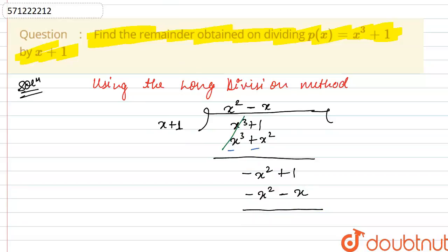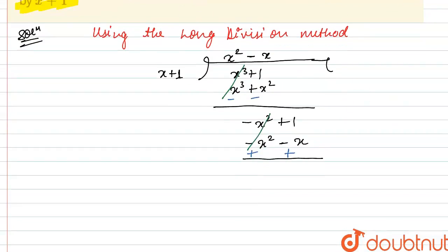So again we will change the sign here. So this will become plus and similarly this will become plus. So again this minus x squared and plus x squared will cancel each other. So we will be left with x plus 1.